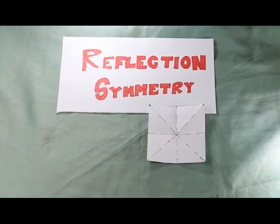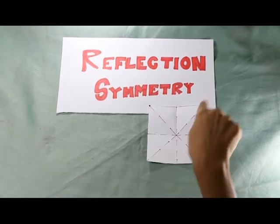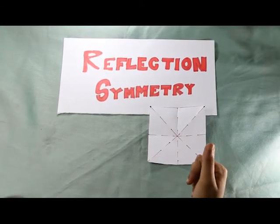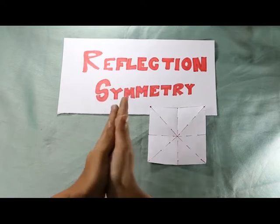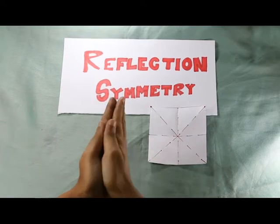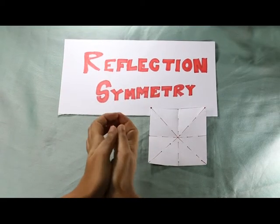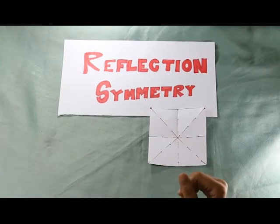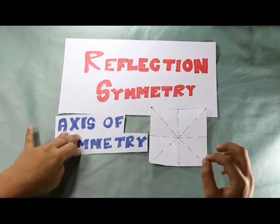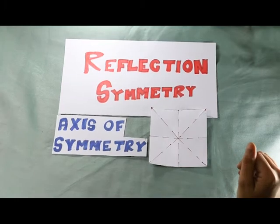Here's a square and as you can see, I've drawn dotted lines on it. If we fold the square along the dotted lines and the two sides perfectly overlap, then the figure is said to have reflection symmetry and the dotted line is said to be the axis of symmetry.